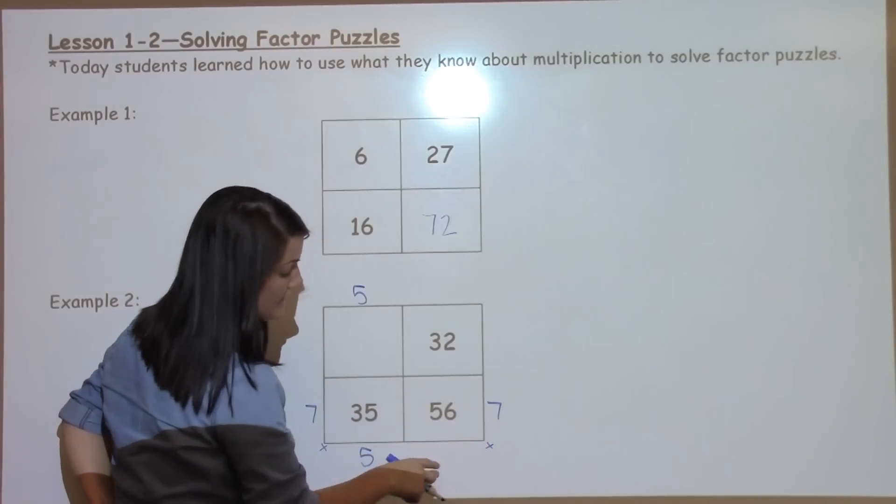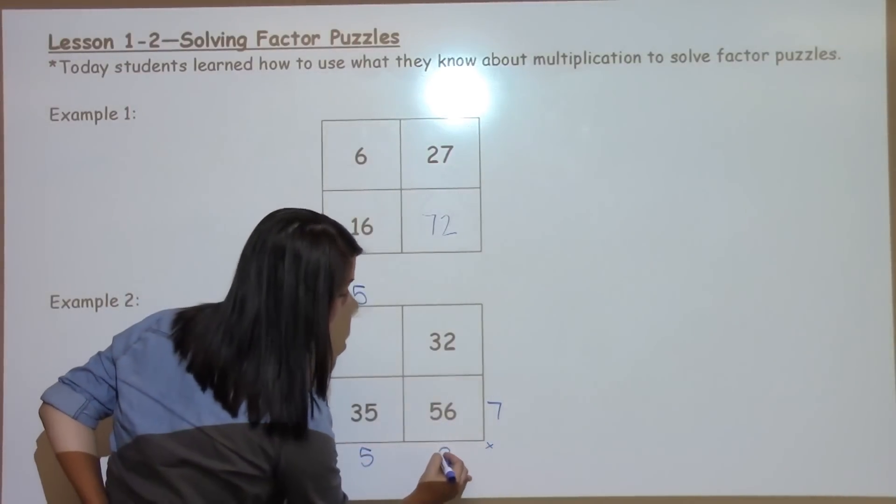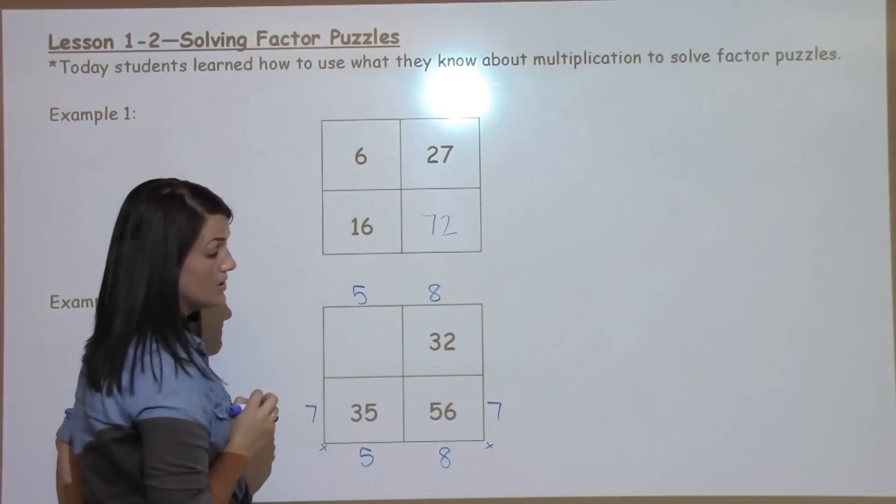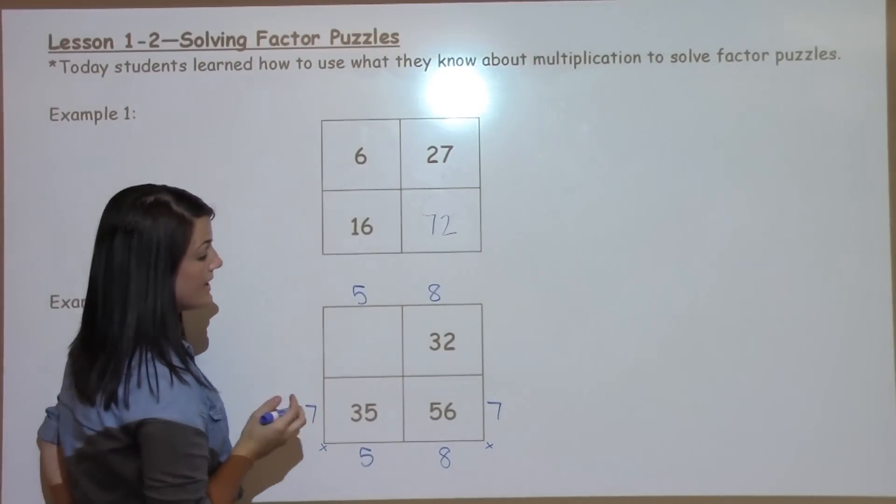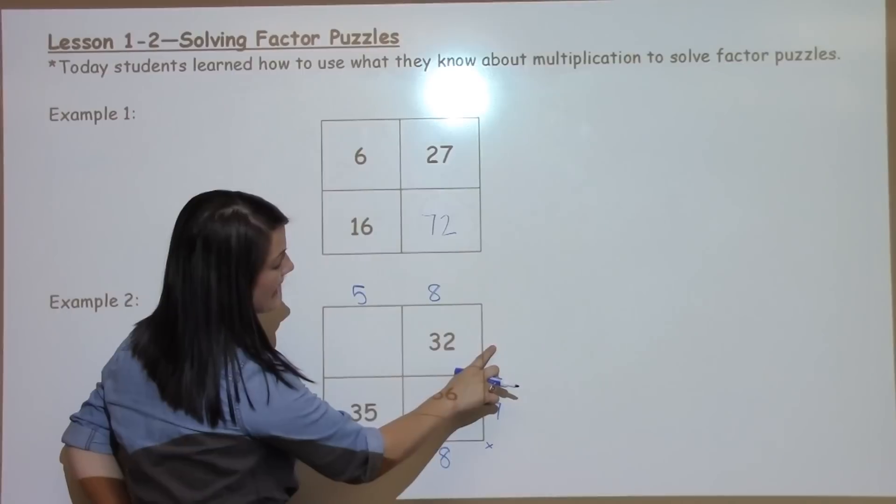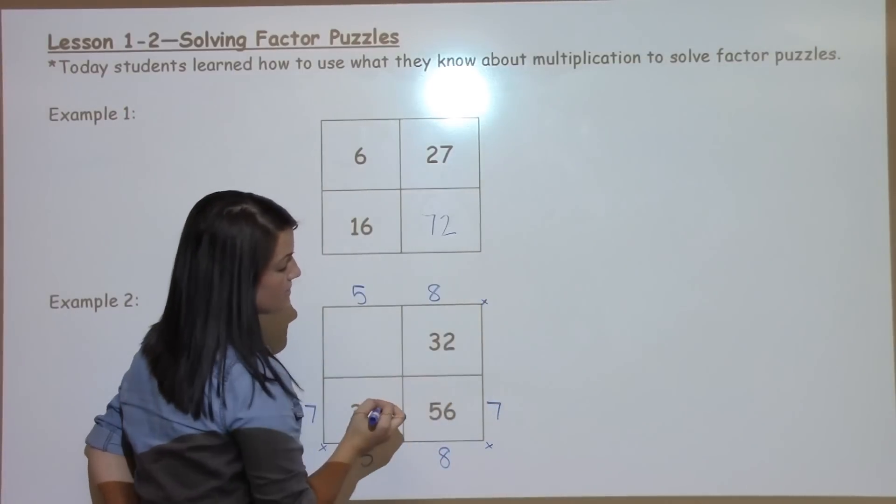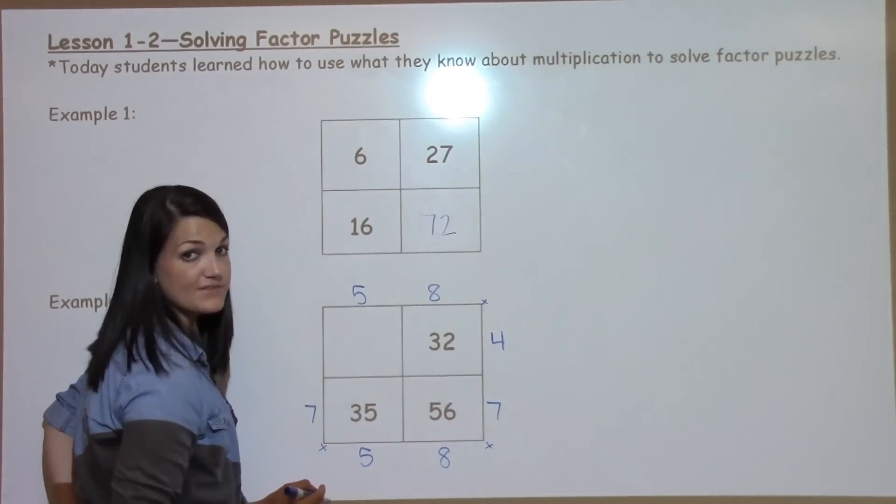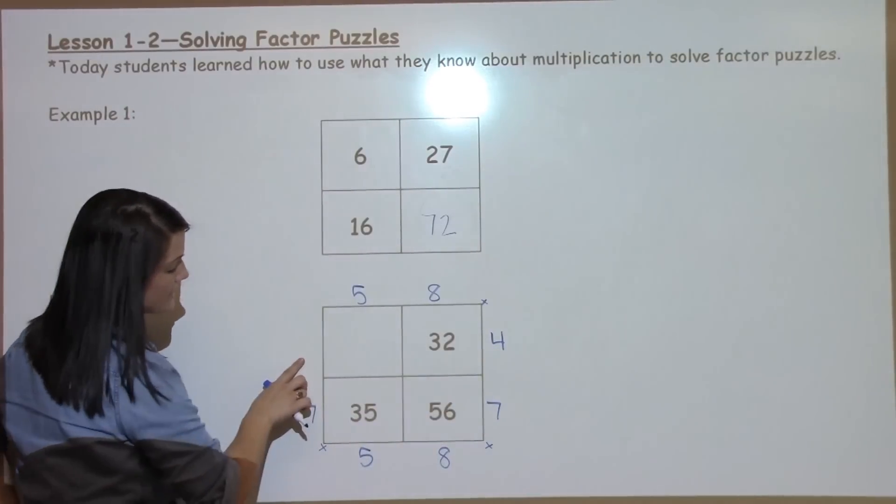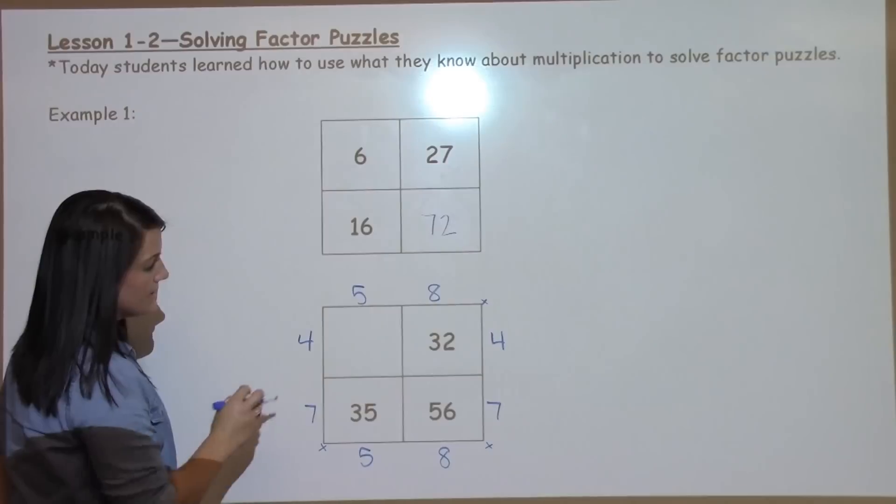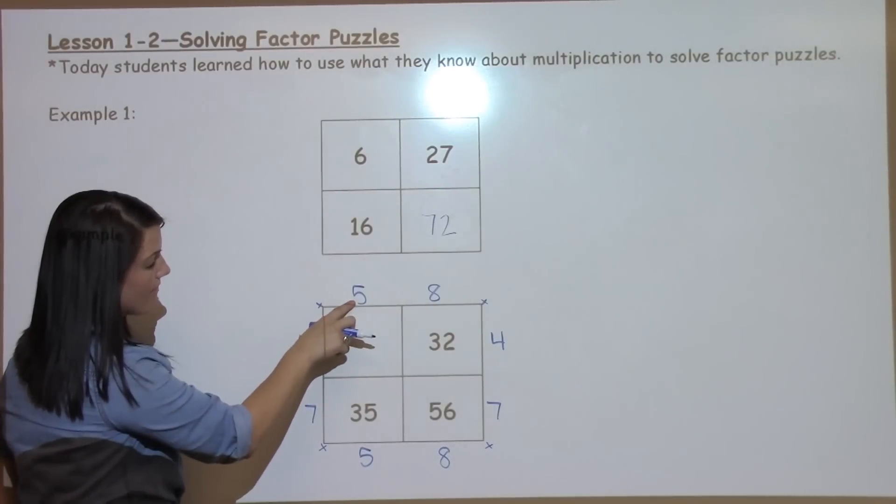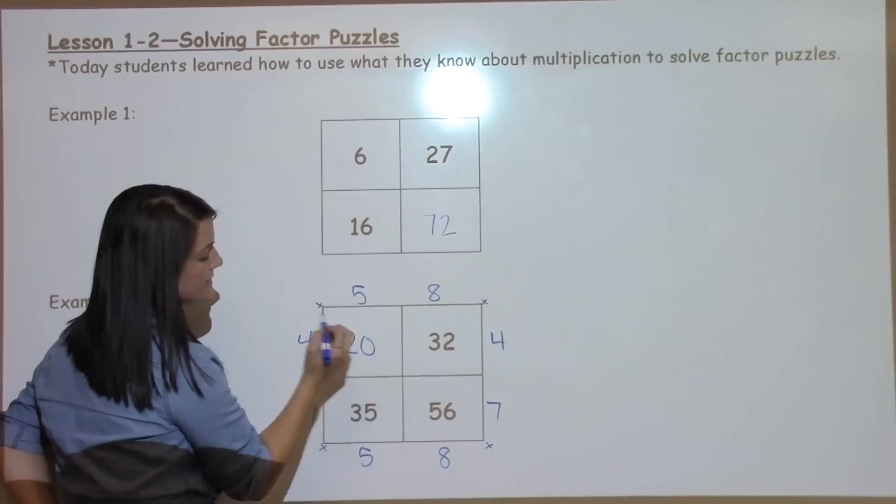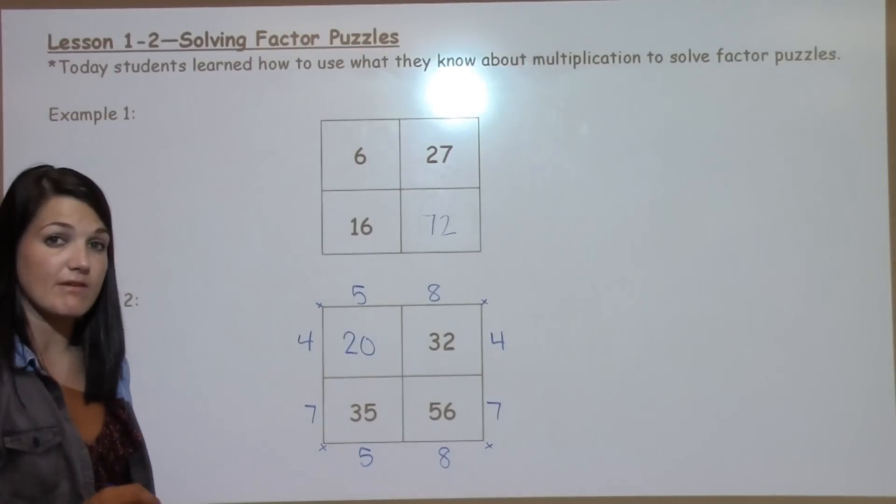7 times what gives me 56? I know that 7 times 8 gives me 56, so I can shoot that straight up top to use it next. Now I have to think 8 times what gives me 32. So if I think through my facts, I know that 8 times 4 gives me 32. That gets to shoot straight across to help me solve the missing piece, which now I have 5 and I have 4. I'm going to multiply them to get 20 as the missing piece of my factor puzzle.